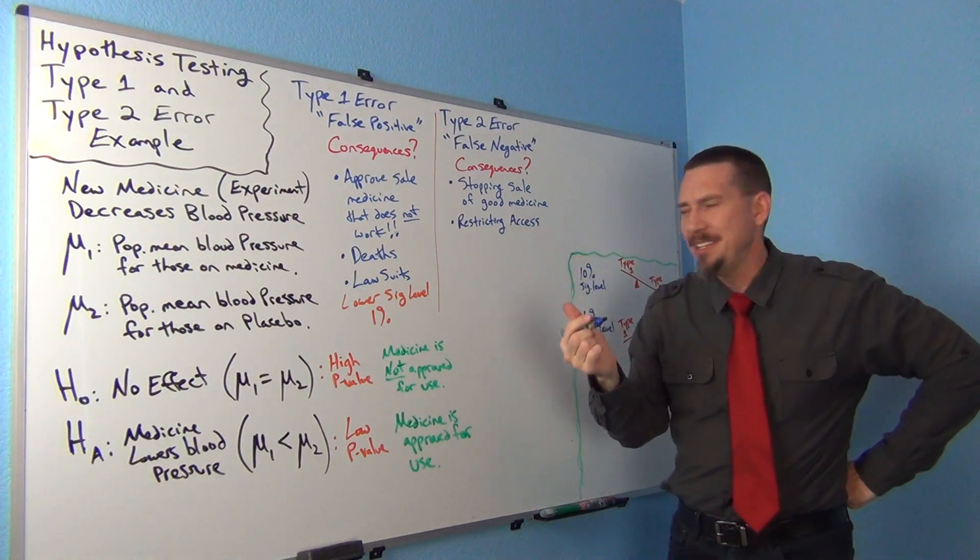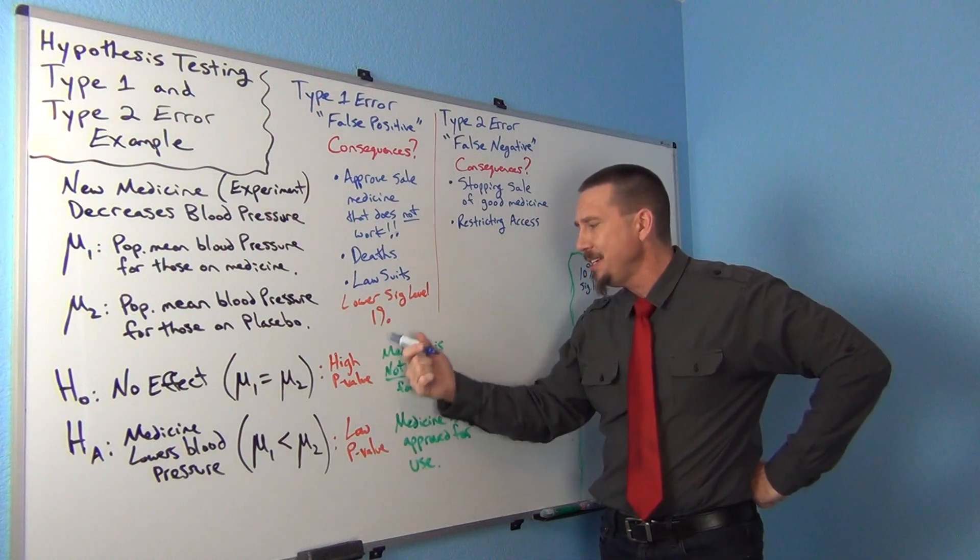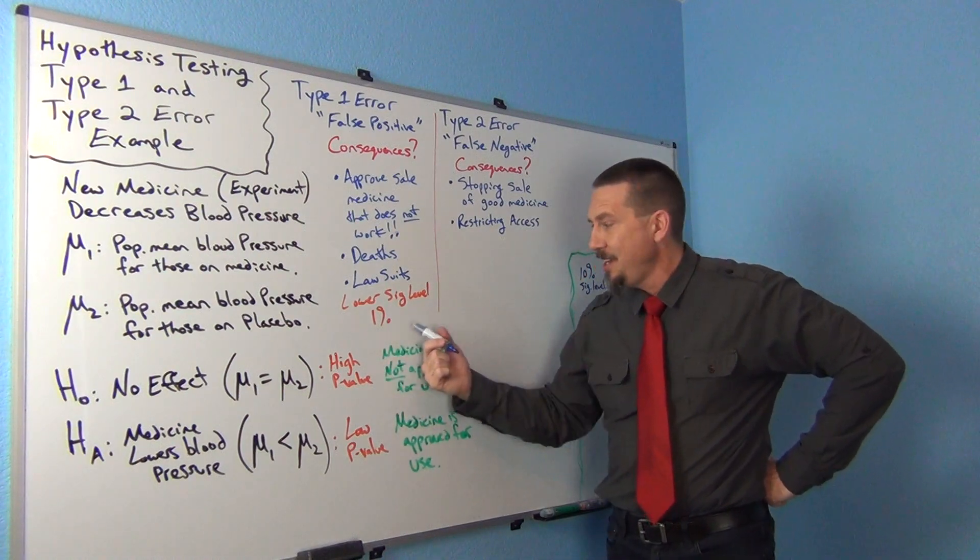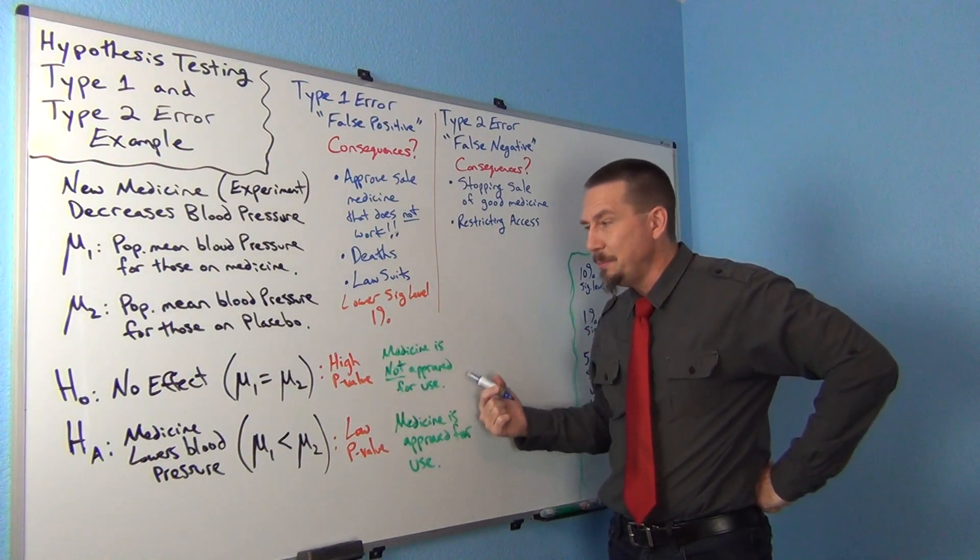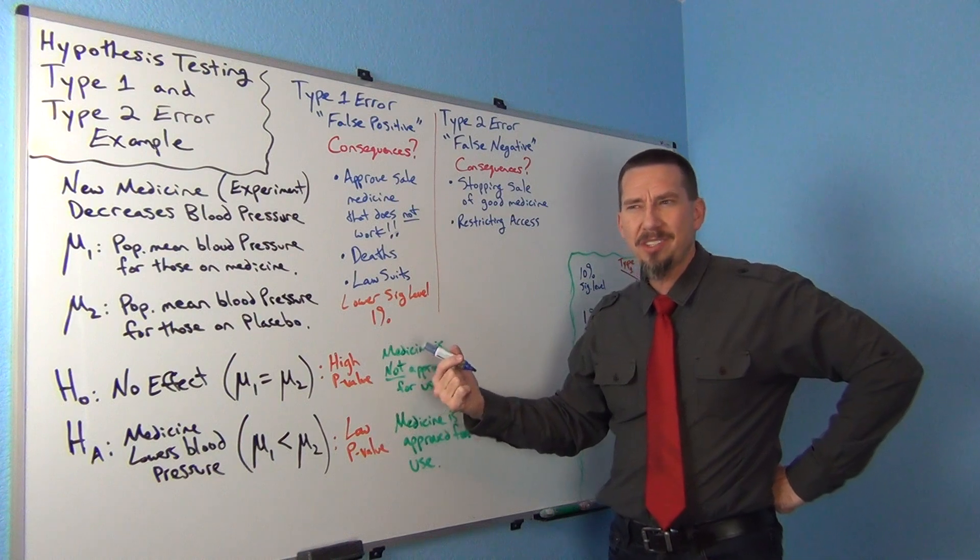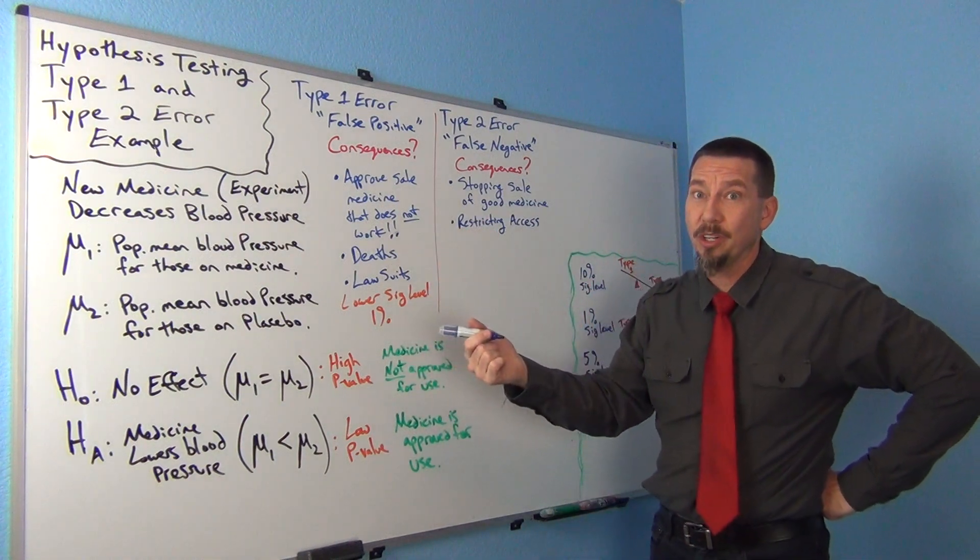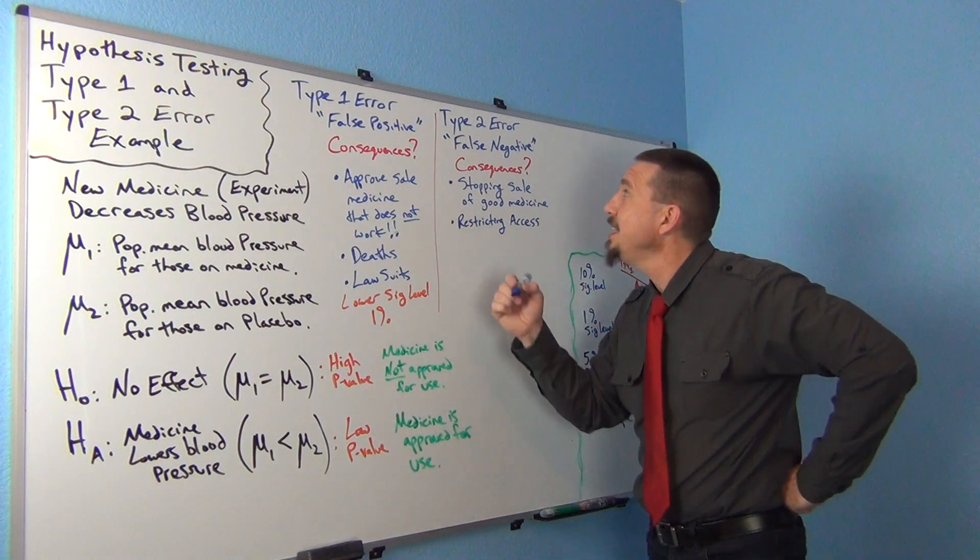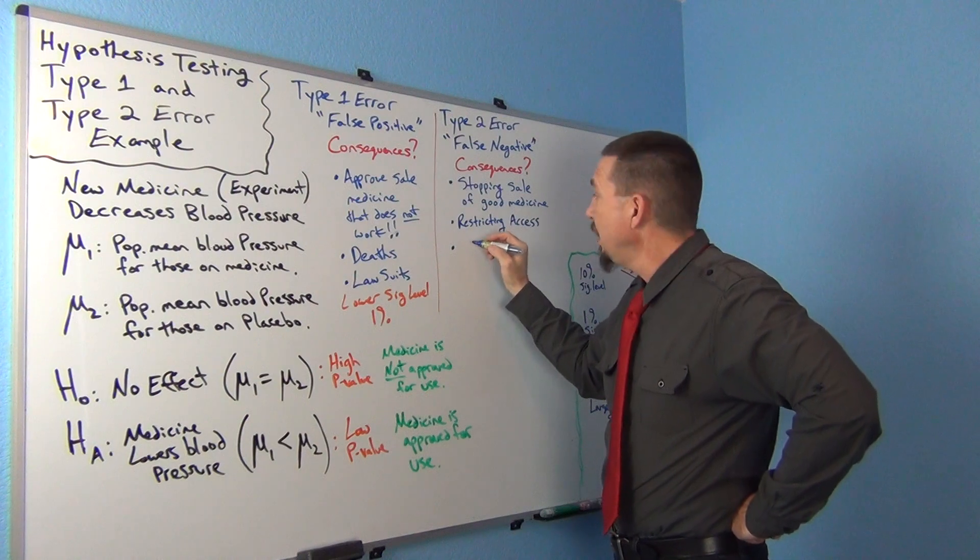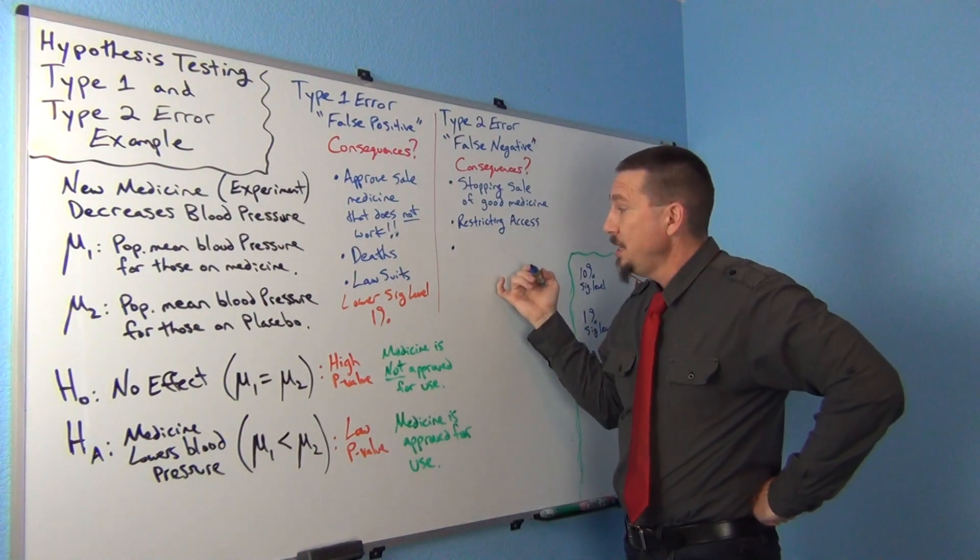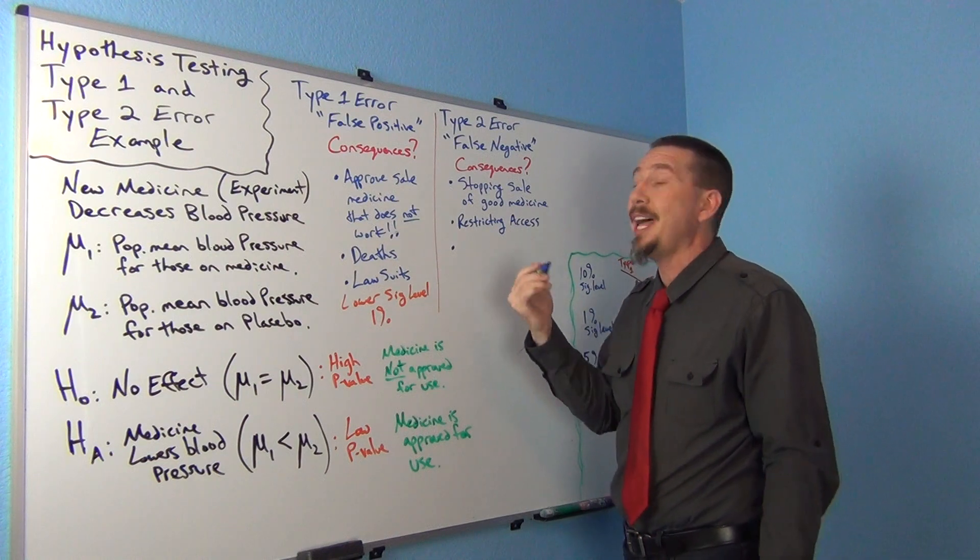But I'm thinking money-wise. The pharmaceutical company stands to make a lot of money, millions and millions of dollars, based on selling this medicine worldwide to millions of people. So we're stopping the pharmaceutical company from selling a medicine that actually works. So it sounds like the big consequence here would be that the pharmaceutical company could stand to lose a lot of money.